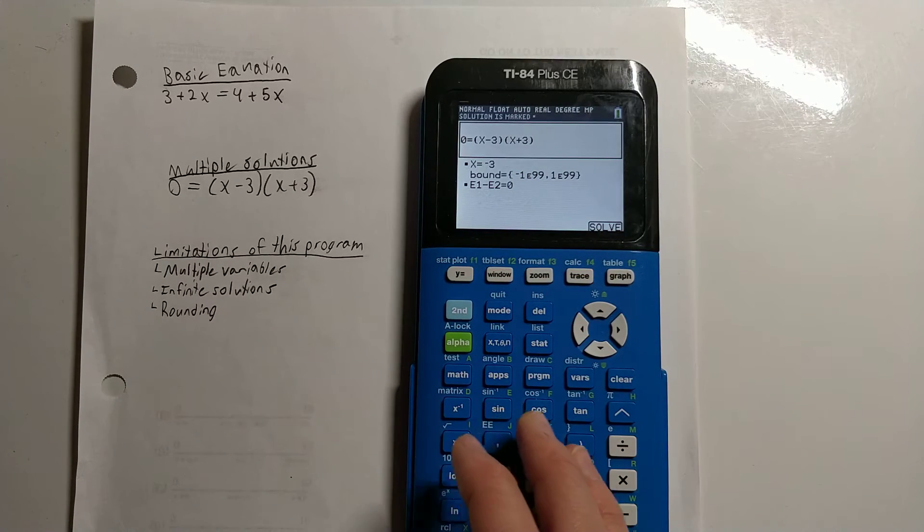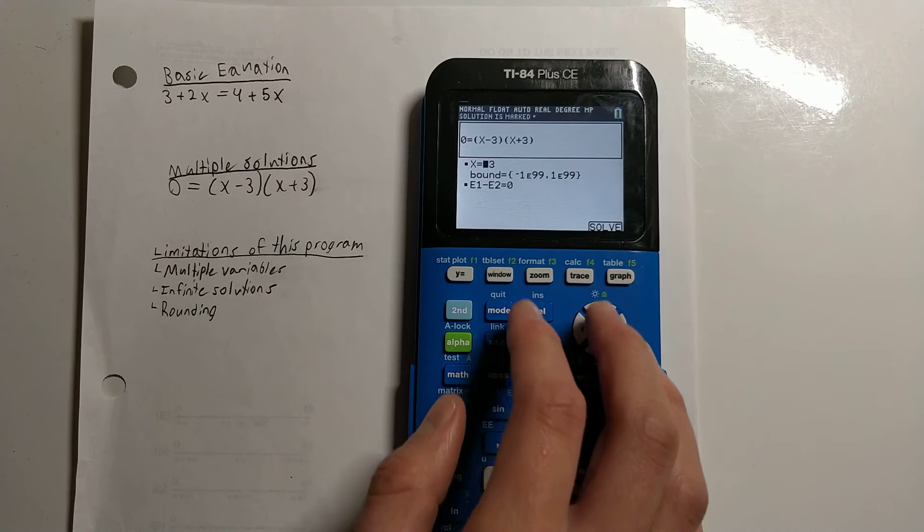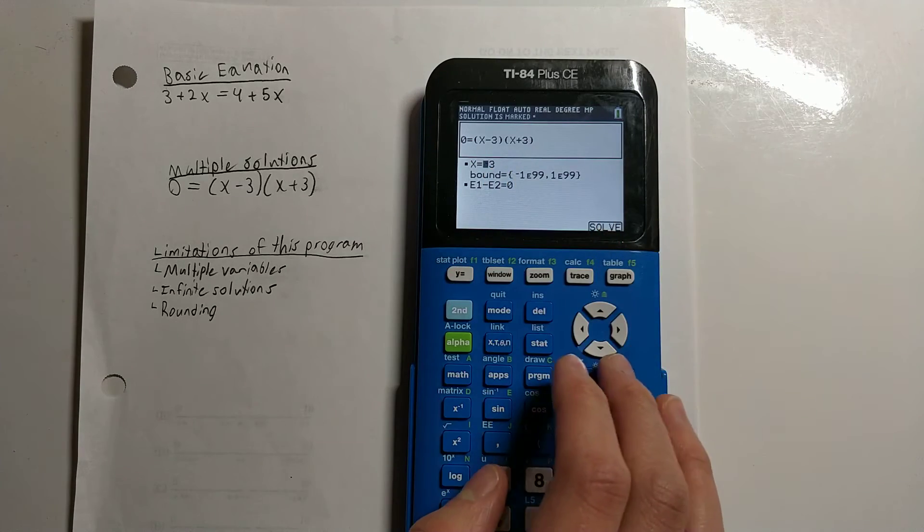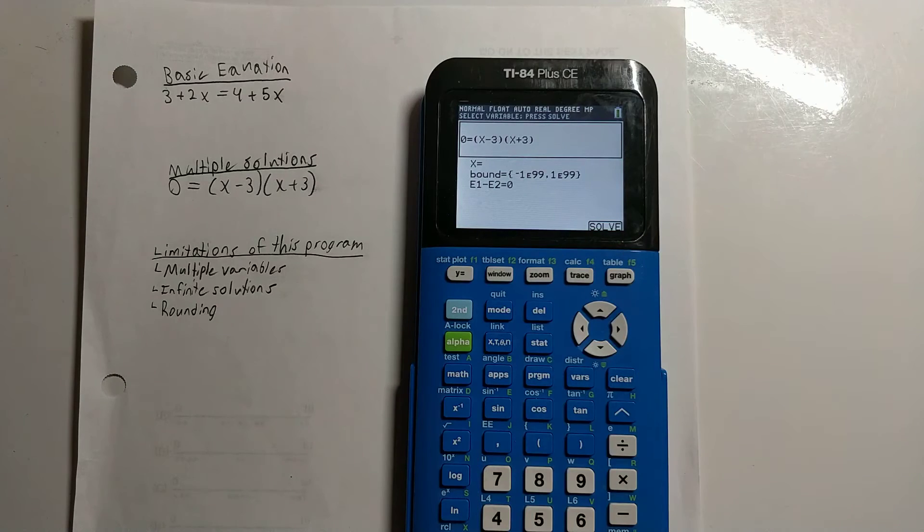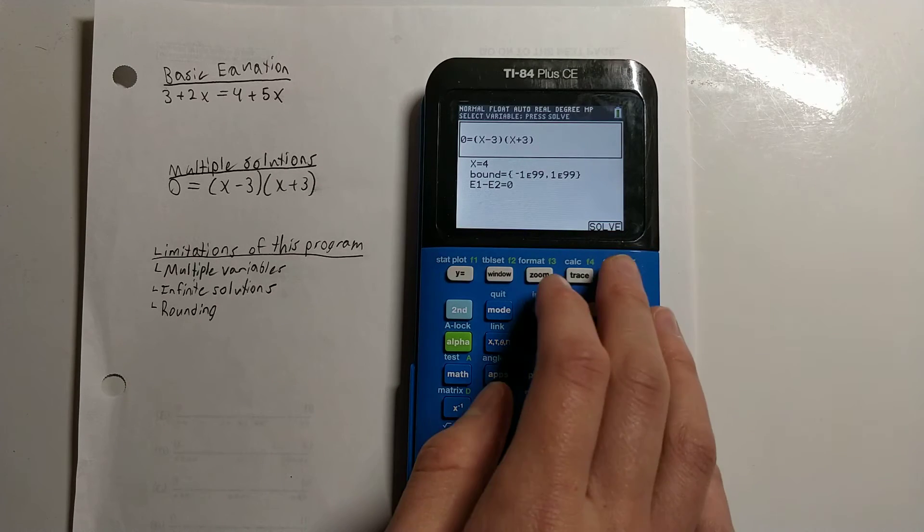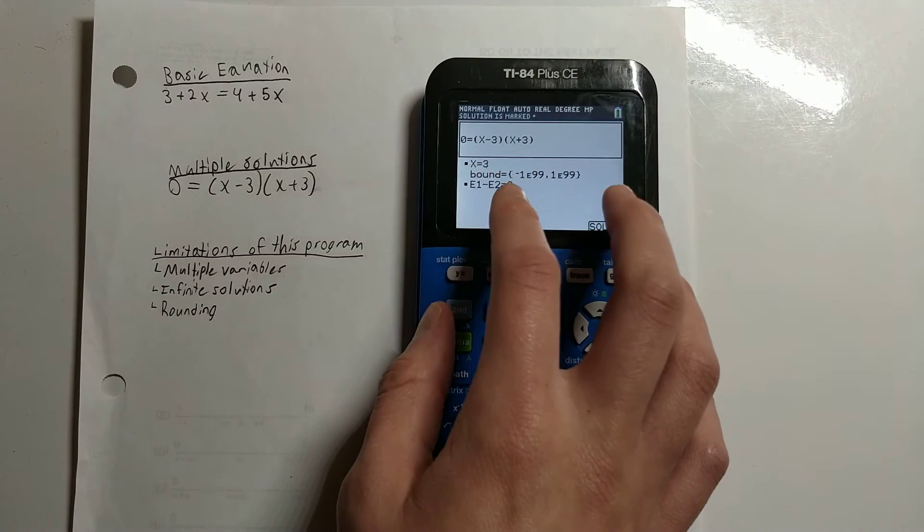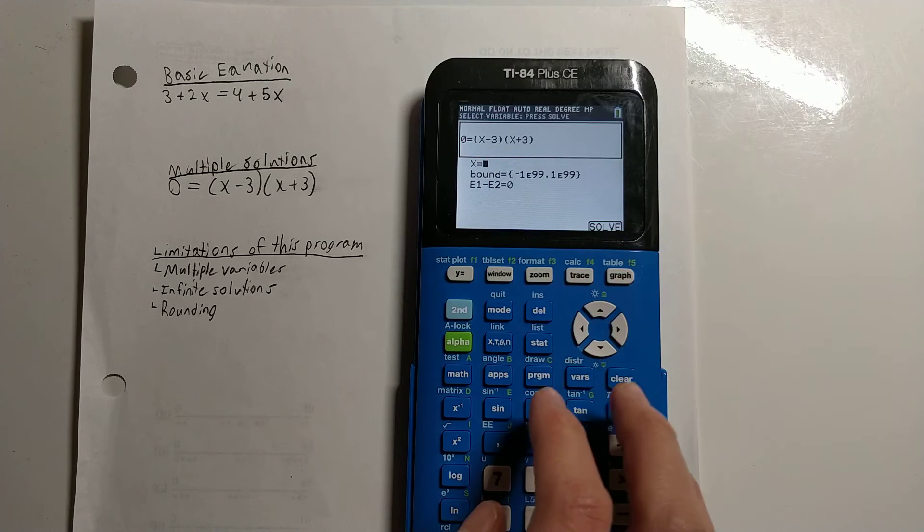Basically, the way this program works is that it tells you the answer that is closest to whatever you type in here. So if I type in 3 here, or if I type in 4, it will say that the answer is 3 because 3 is the closest solution to 4.